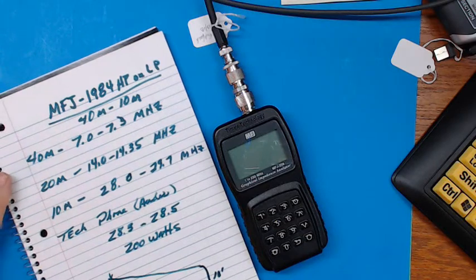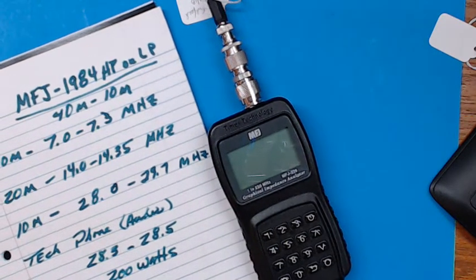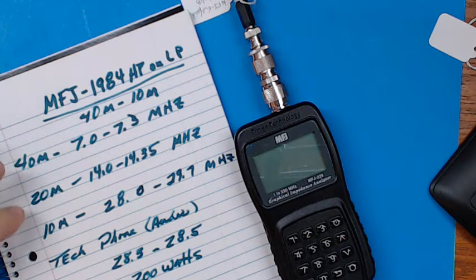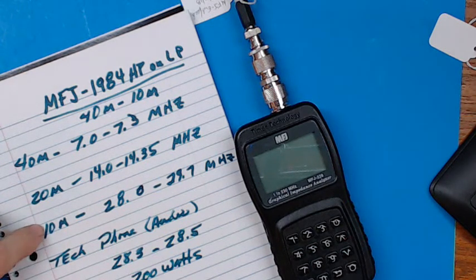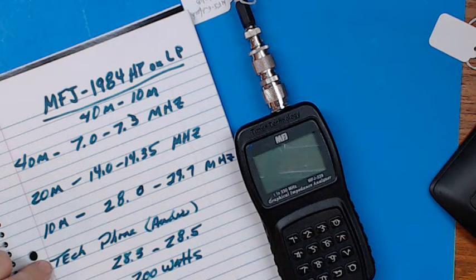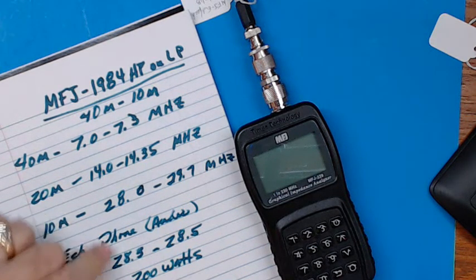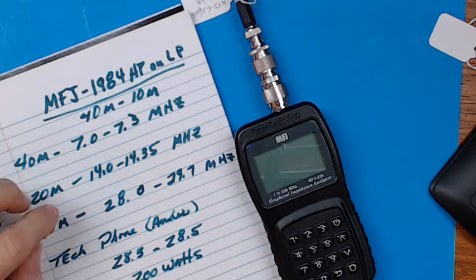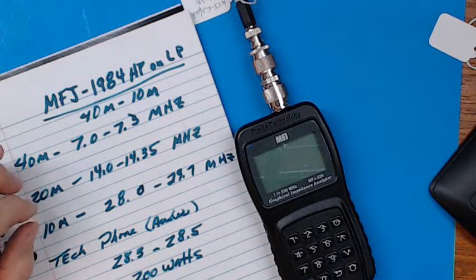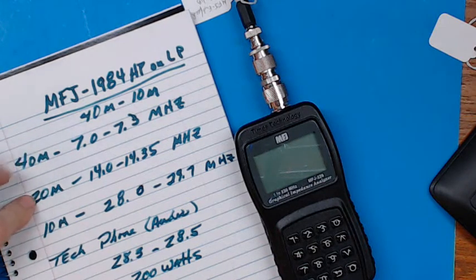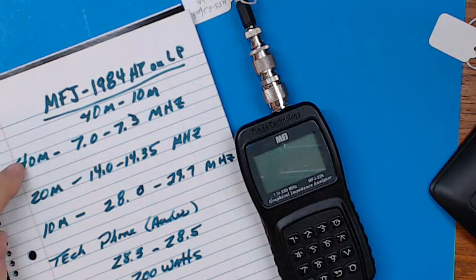We'll be looking at the SWR at 40, 20, and 10 meters. I can only operate on 10 meters voice, or phone, because I only have a technician license. So I can operate on 10 meters phone from 28.3 to 28.5 MHz. I can operate on these other frequencies CW, but I can't work CW. I can listen on any of these frequencies. 40 and 20 are fairly active all the time, especially 40.